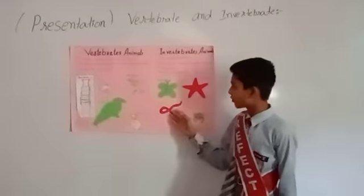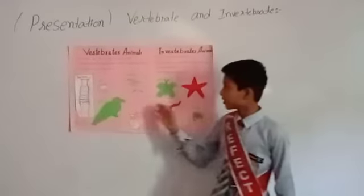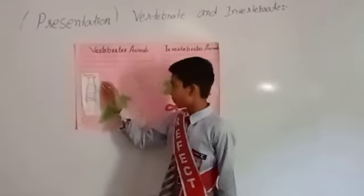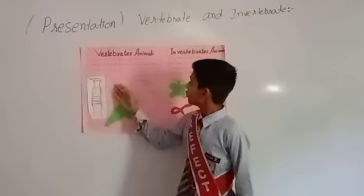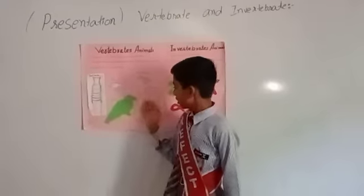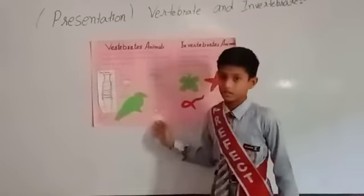Further examples of invertebrates include butterfly, starfish, leaf, and octopus. Examples of vertebrates include fish, amphibian, bird, and mammals.